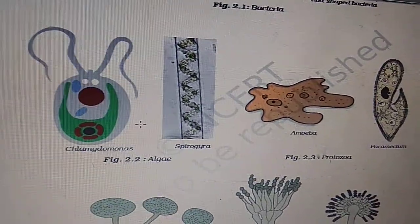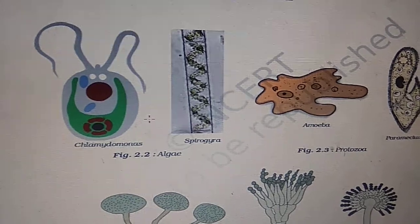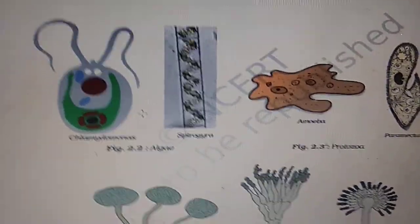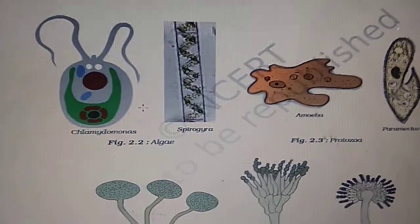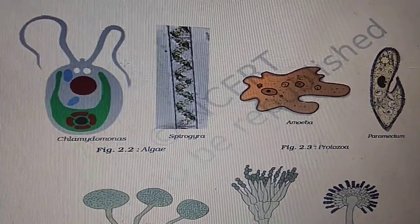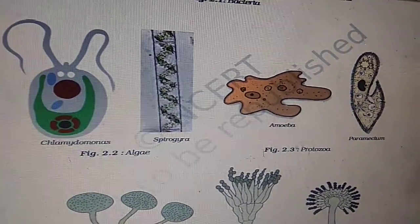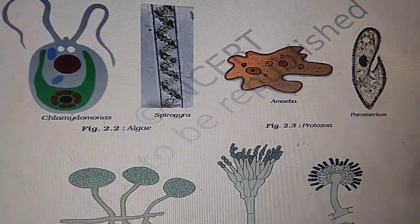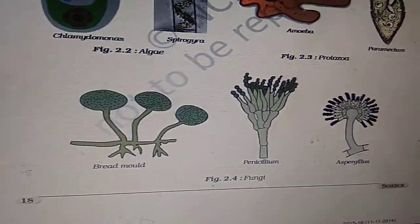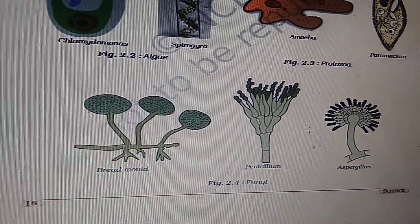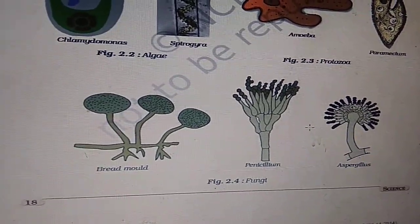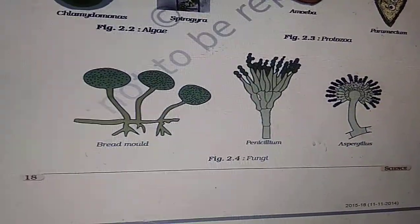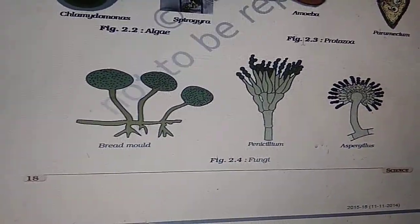Chlamydomonas and Spirogyra are algae found in ponds. The green color covering you see in ponds is Spirogyra — under the microscope you can see its spiral structures. Amoeba is unicellular and extends pseudopodia. Paramecium is shown here. Bread mold is a fungi that grows on moist bread, forming a green covering. Penicillin is responsible for the formation of antibiotics.